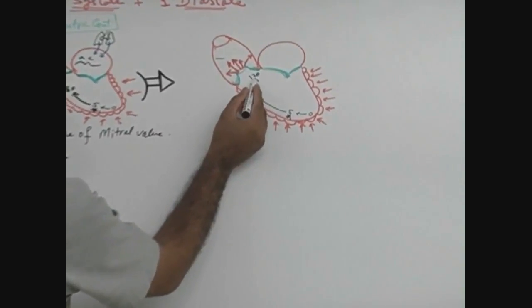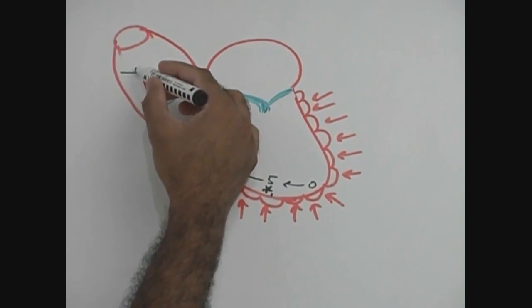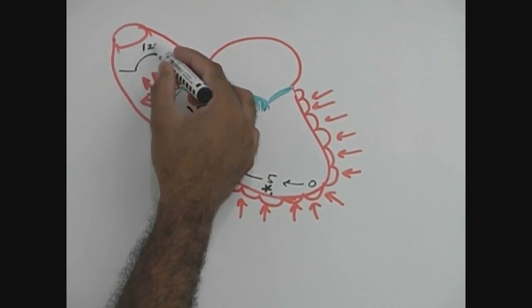Pressure changes which are occurring in the left ventricle will be faithfully transferred to the aorta. So pressure in aorta, which was previously 80, as soon as the valve opens, pressure in the ventricle goes up to 120 and of course pressure in aorta will also go to 120.